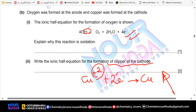Why did I write it like that? Copper is already positive two. When I write positive two here, and I add two electrons, this is reduction. This is oxidation at the anode, and this is reduction at the cathode.